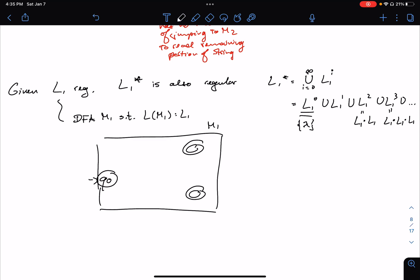So for a string in L1 star, that just means that for W to be in L1 star, that means that there exists some natural number K, for which W is equal to W1, W2, and so on, WK, where each of these strings are in the original language L1.